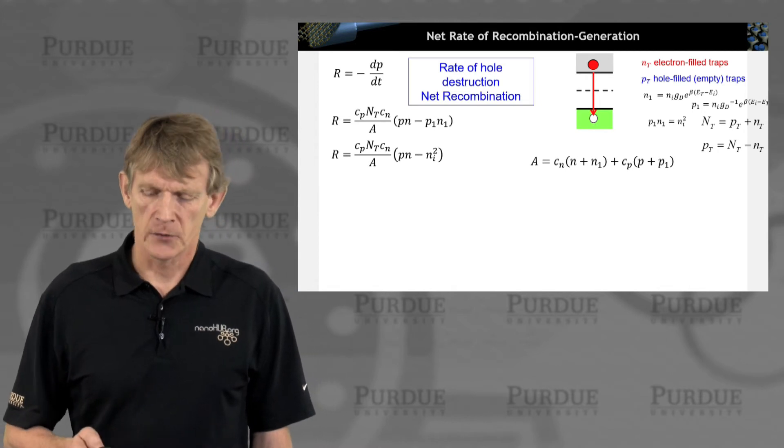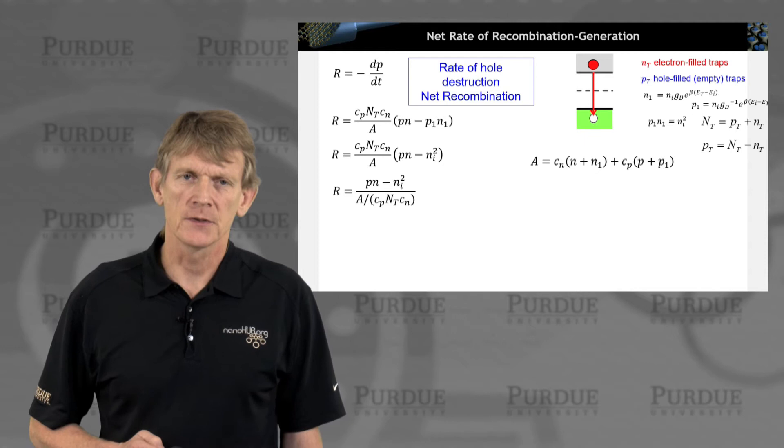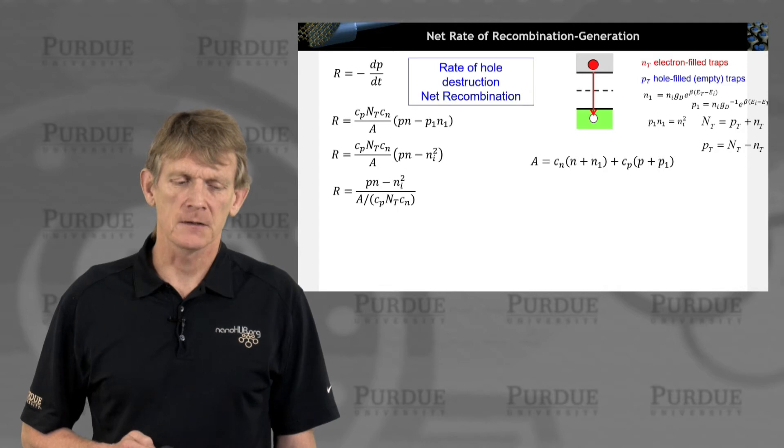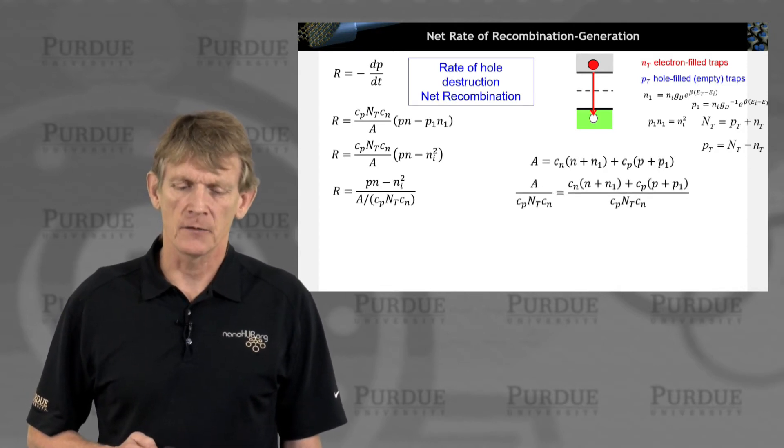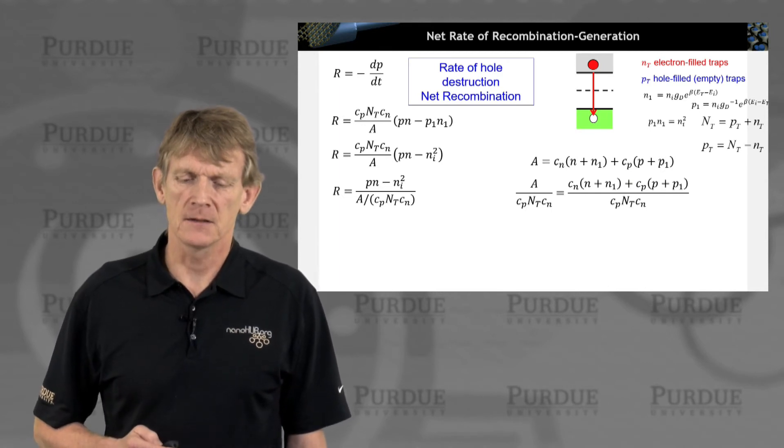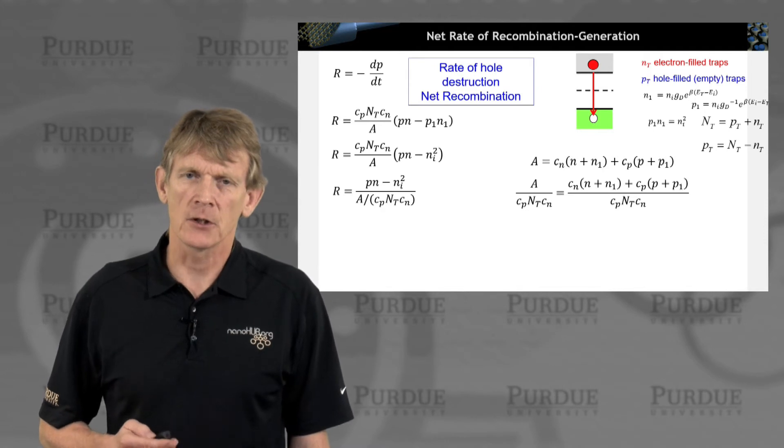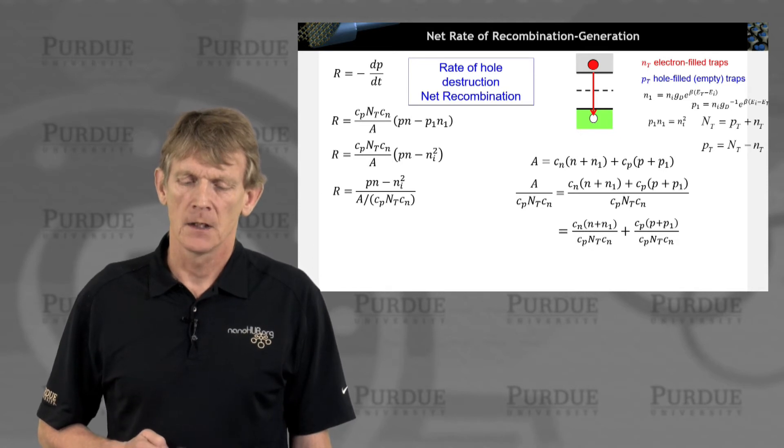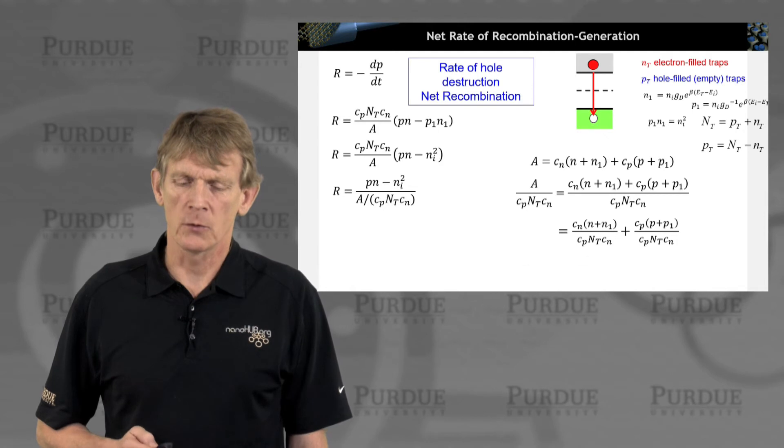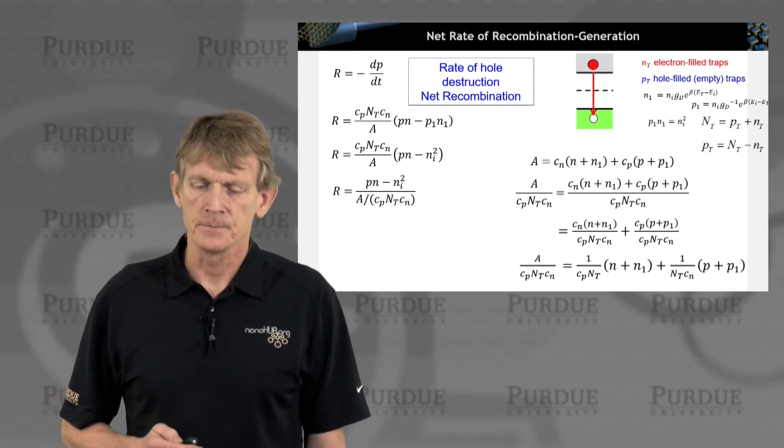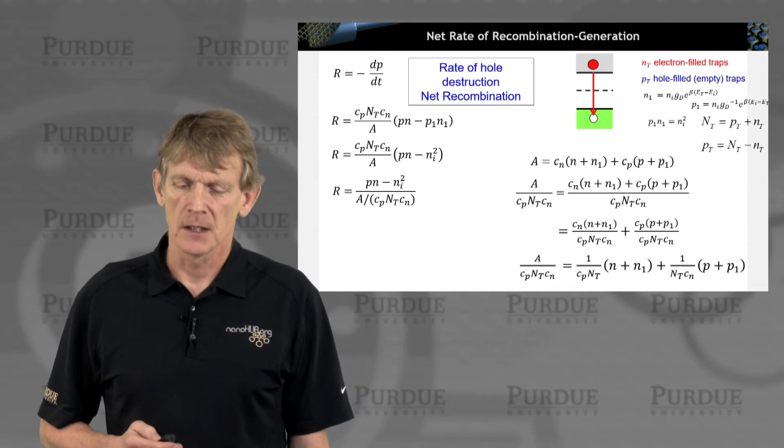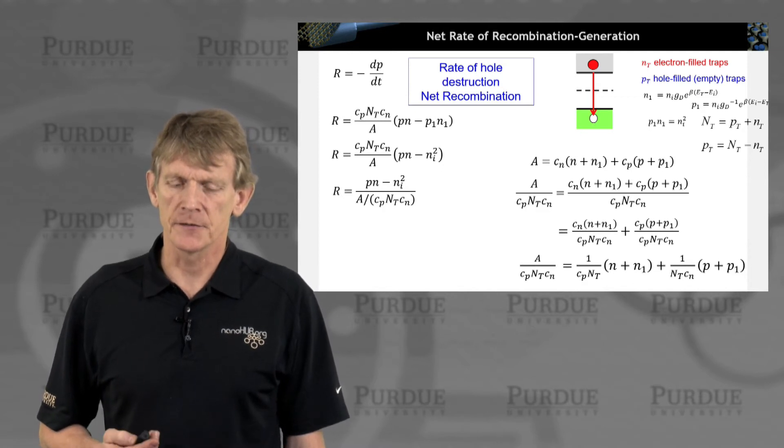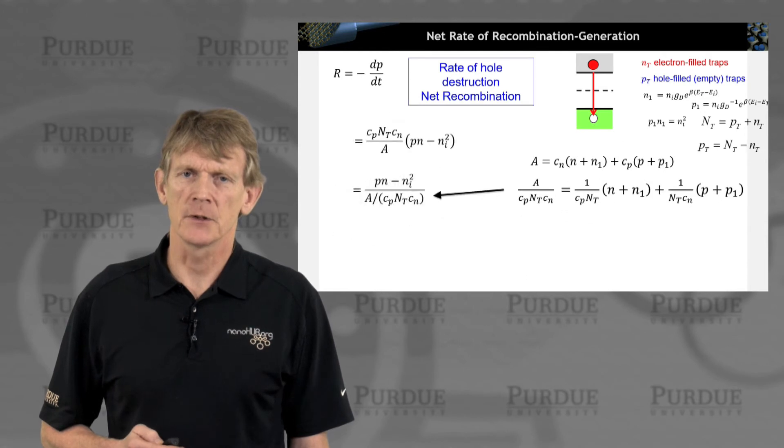Alright. Now we can formulate some more items here where we use this common denominator A. We're going to look at that common denominator with the coefficients that are up front. So we're going to look at A over these three coefficients, number of traps, Cp, and Cn. Nothing much happened here. We're just going to come up with some more physically meaningful expressions for these terms.